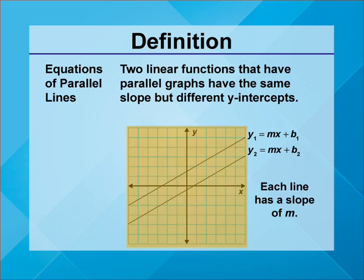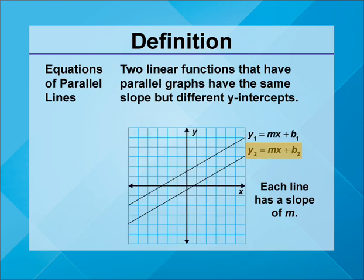In the linear graph shown, y1 equals mx plus b1 and y2 equals mx plus b2. Each equation has the same slope m. As a result, the two lines are parallel to each other.